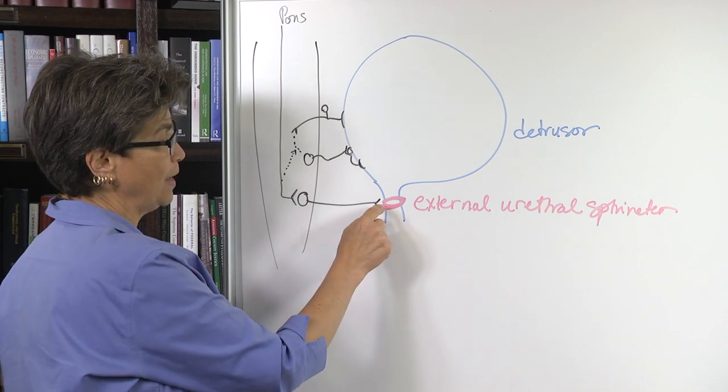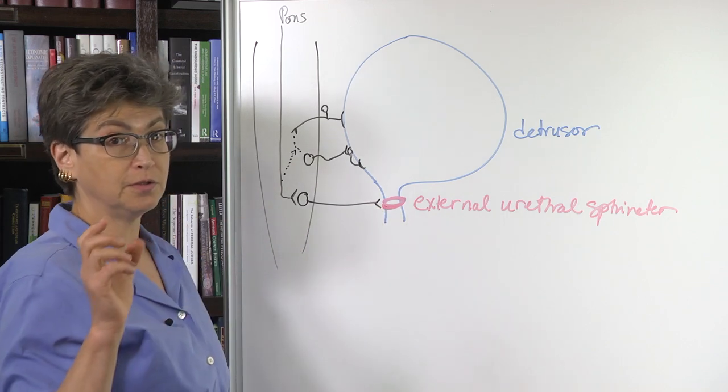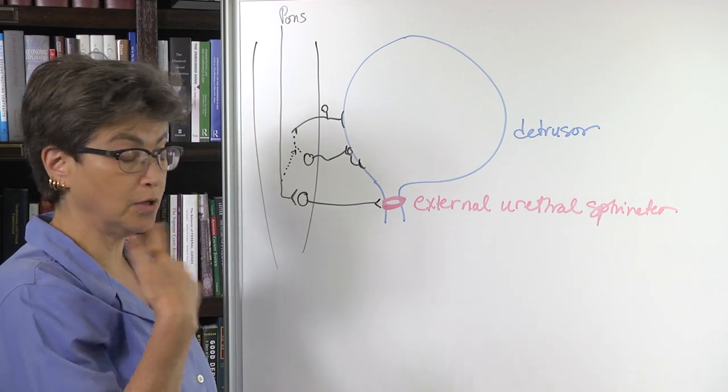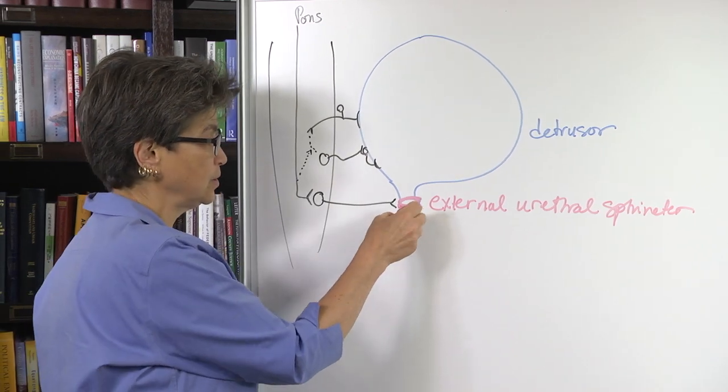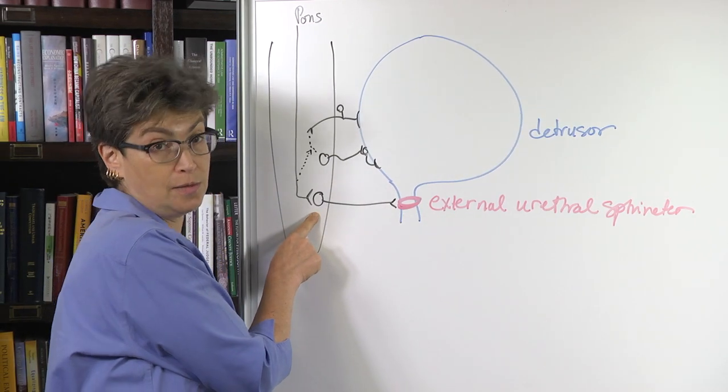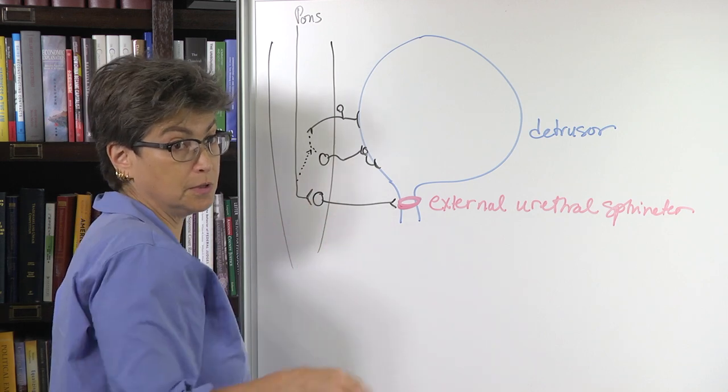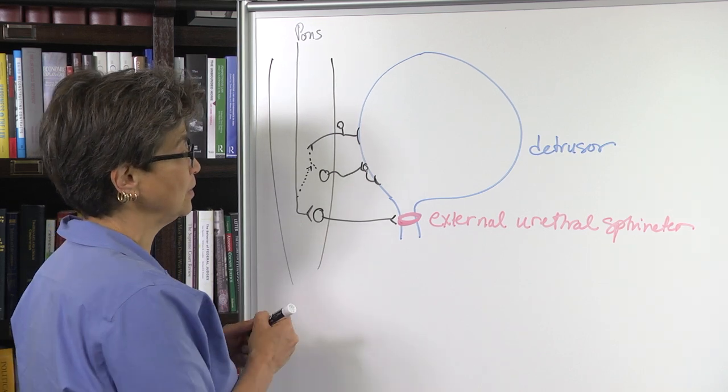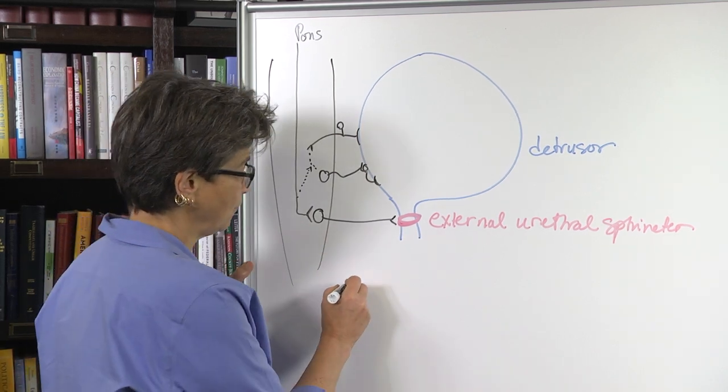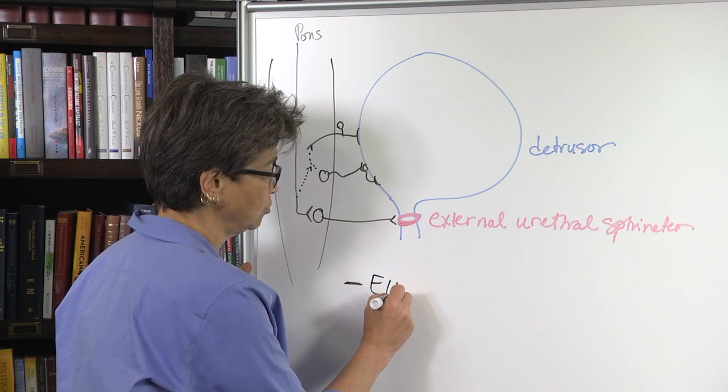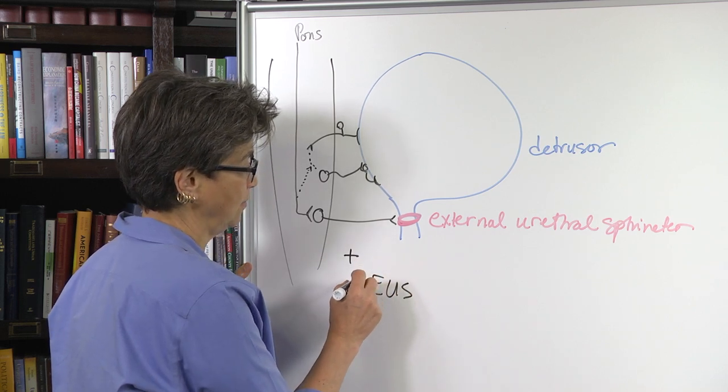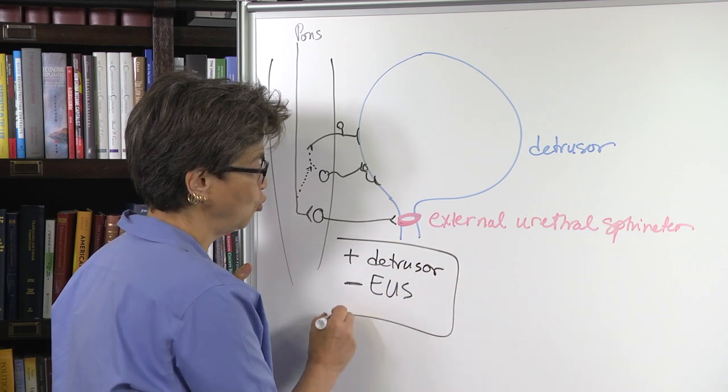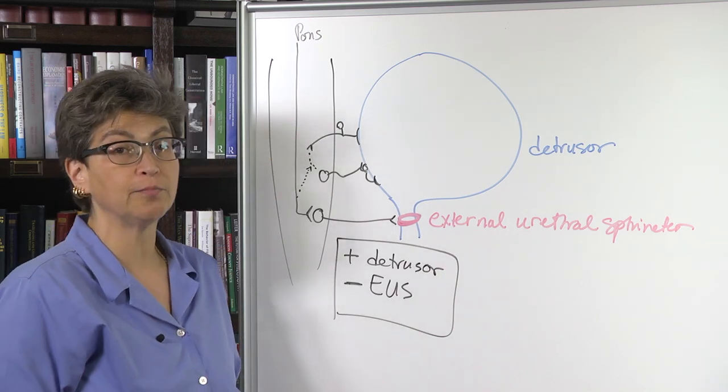There's also a skeletal muscle involved. This is the external urethral sphincter. This is one of these ring muscles. It's a sphincter muscle. And this is innervated by a motor neuron because it's a typical skeletal muscle. And this is voluntarily relaxed. So you have to have a relaxation of the external urethral sphincter and an excitation of the detrusor. And those are the core necessities for micturition.